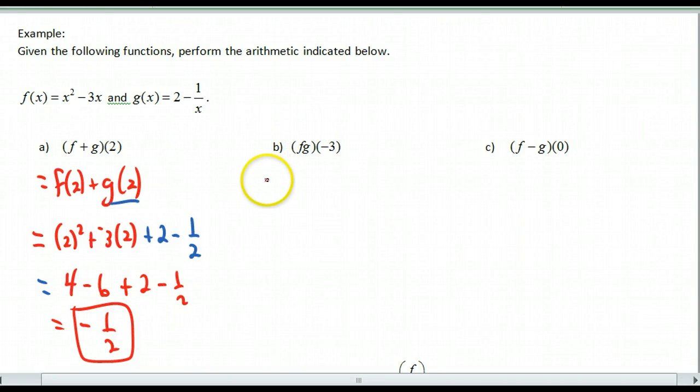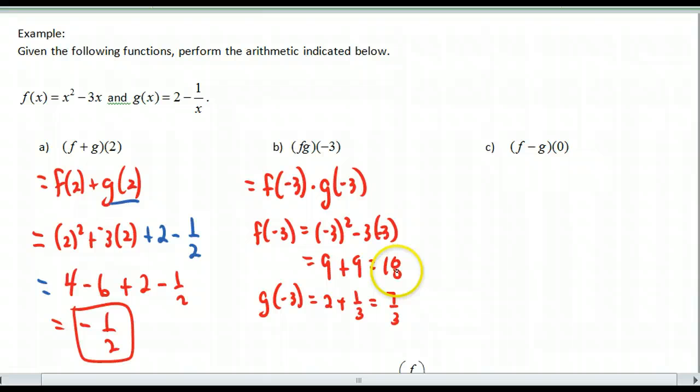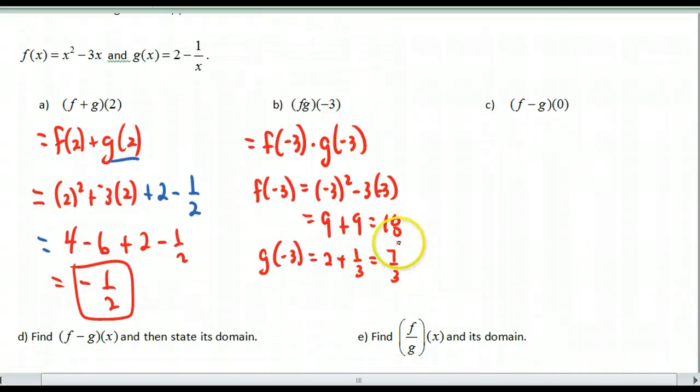This one, f times g of negative 3. So this is going to be f of negative 3 times g of negative 3. Should be the same thing. So what I'm going to do is I'm going to find f of negative 3 first. If I do f of negative 3, why don't you try this? Looks like I got a bunch of negatives there. Everything turns positive. So that's 18. You go find g. And so I get g of negative 3 is equal to 7 thirds. And since I multiply and I want to leave it or I want to make it into an improper fraction. So I get 18 times 7 thirds. This cancels. So I'm left with a 6. So I get 42. So the product f times g of negative 3 is equal to 42.